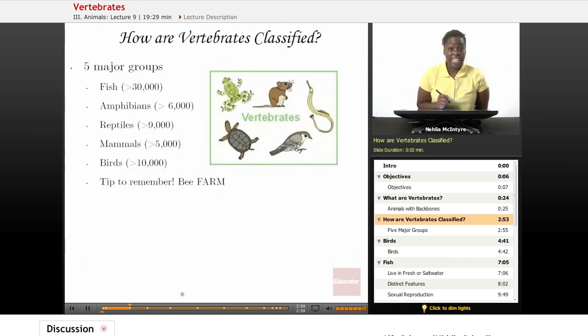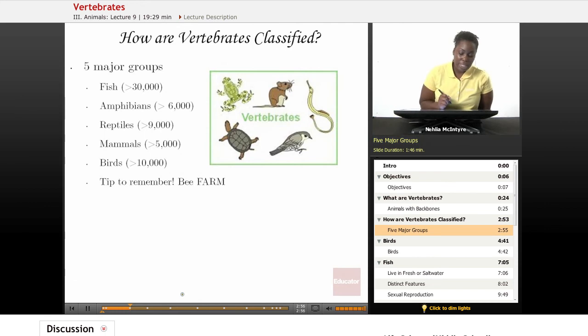How are vertebrates classified? Well, scientists classify vertebrates in five major groups. The major groups are named fish, amphibians, reptiles, mammals, and birds.